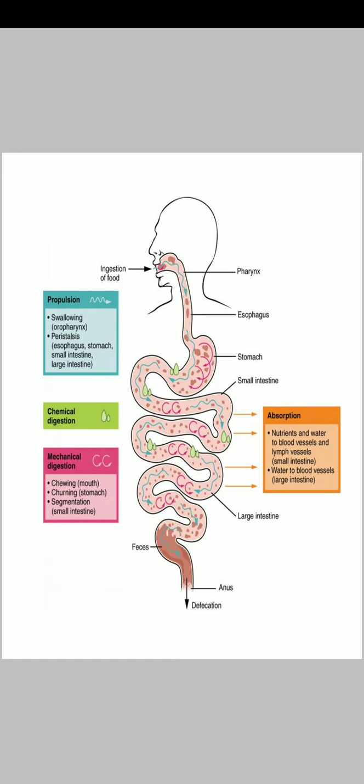Then comes mechanical digestion. In mechanical digestion there are three things: first is chewing, second is churning, and third is segmentation. In the mouth we use chewing with teeth on top and lower. Churning means breaking down food in the stomach. Segmentation means small particles moving in the small intestine. After the small intestine, the absorption process finishes.